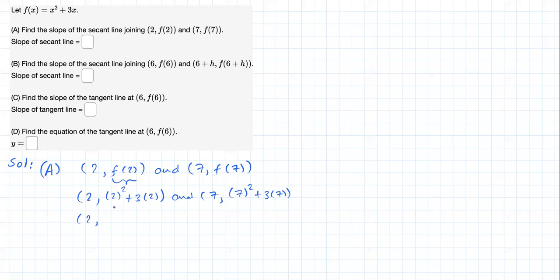This is going to be (2, 2² = 4, 3×2 = 6, 6+4 = 10). And (7, 7² = 49, 3×7 = 21, 21+49 = 70).